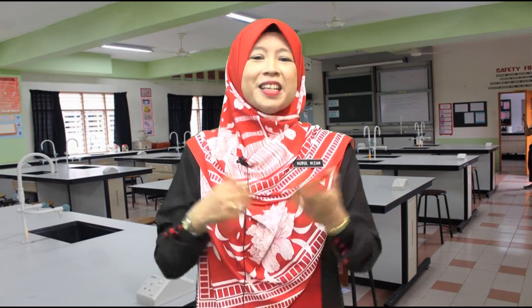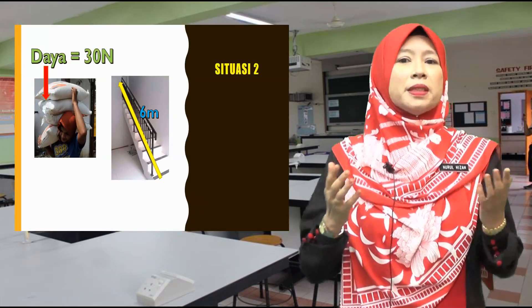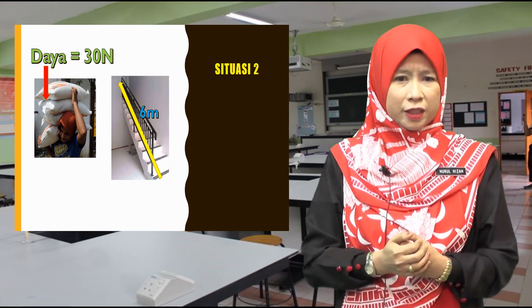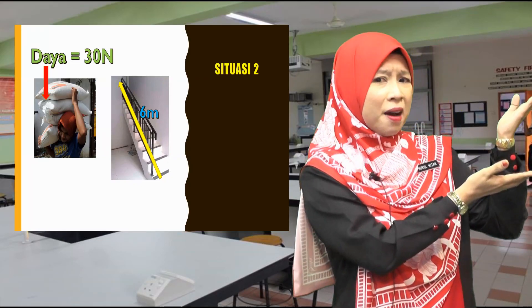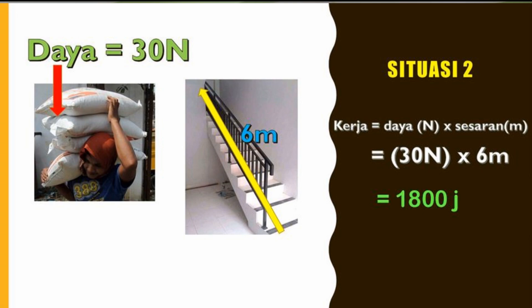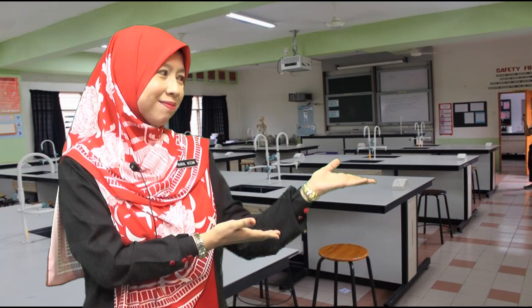Baiklah, cikgu akan memberikan dua lagi contoh situasi bagi mengira kerja. Situasi dua menunjukkan seorang lelaki sedang mengangkat 4 kampik beras. Daya yang dikenakan ialah 30 Newton dan lelaki tersebut perlu menaiki tangga setinggi 6 meter. Berapakah kerja yang dilakukan? Seperti biasa, kita gunakan formula W = FS. Gantikan nilai daya 30 Newton dan sesaran 6 meter ke dalam formula. Jawapannya ialah 1800 Joule.